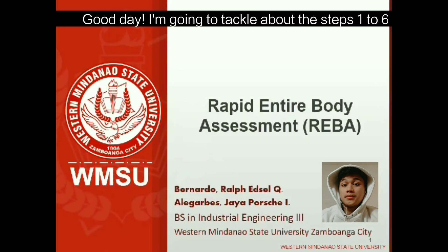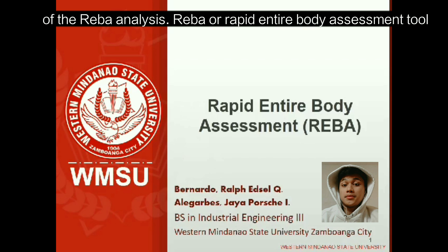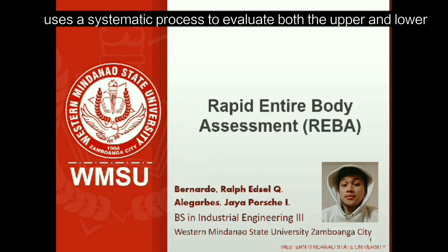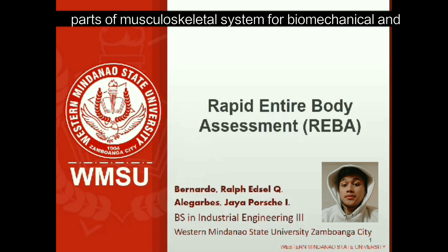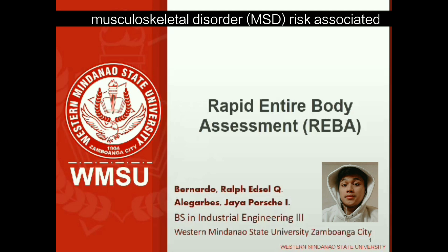This presentation covers steps one to six of the REBA analysis. REBA, or the Rapid Entire Body Assessment tool, uses a systematic process to evaluate both upper and lower parts of the musculoskeletal system for biomechanical and musculoskeletal disorder, or MSD, associated with the job being evaluated.